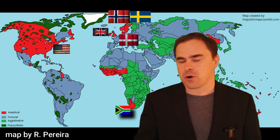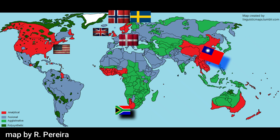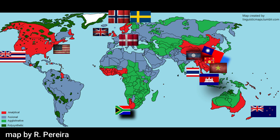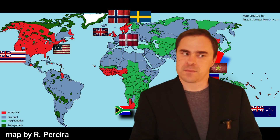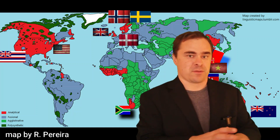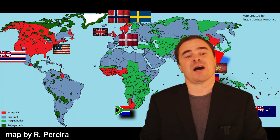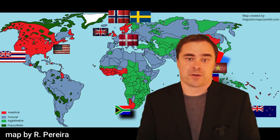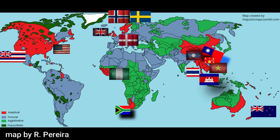Languages far away are analytic as well. Chinese is analytic, and a lot of Southeast Asian languages too — Vietnamese, Hmong, Lao, Thai, Burmese, Khmer. Going into the Pacific, Hawaiian and Maori are also analytic. In Africa, Yoruba — spoken widely in Nigeria and that region — is a big analytic language.